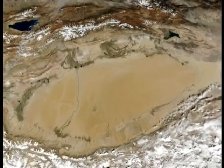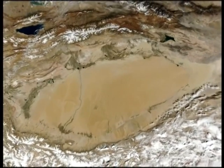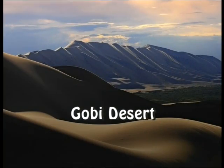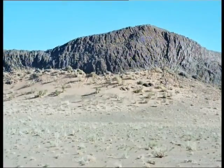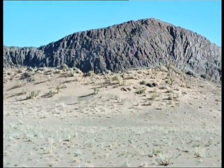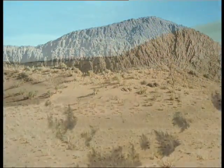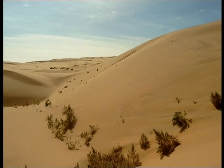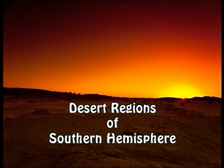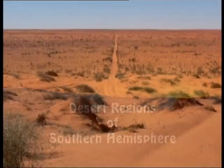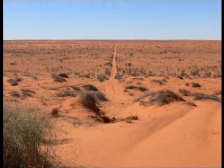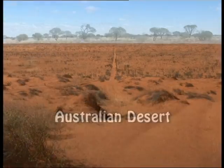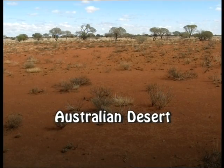The Taklamakan Desert, located in central Asia in the territory of Tibet, has halophytic vegetation in all valleys. The Gobi Desert is also located in central Asia; mountains and sand dunes are its common features.